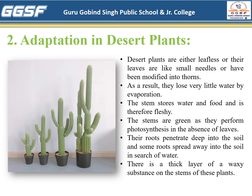Now we will see the second type: adaptation in desert plants. Plants and animals living in the desert need special adaptation to survive in the harsh environment. Desert plants have two main adaptations: the first is the ability to collect and store water, and the second is features that reduce water loss. Some leaves seem to be modified into thorns for conserving water, so very little water is lost by evaporation. Examples of desert plants are cactus and acacia. The stems store water and food and are therefore fleshy. The stems are green and perform photosynthesis in the absence of leaves.